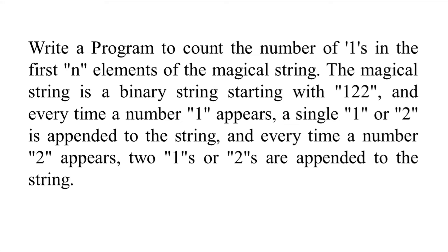Write a program to count the number of ones in the first n elements of the magical string. The magical string is a binary string starting with 1, 2, 2. Every time a number 1 appears, a single 1 or 2 is appended to the string, and every time a number 2 appears, two 1s or 2s are appended to the string.